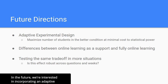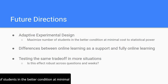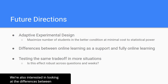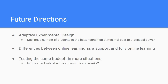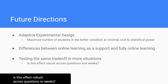In the future, we're interested in incorporating an adaptive experimental design so we can maximize the number of students in the better condition at minimal cost of statistical power. We're also interested in looking at the differences between online learning as a support to mostly in-person classes and fully online learning like what we have to do now. We're also interested in testing the same trade-off in more situations — is this effect robust across questions or weeks? Thank you.